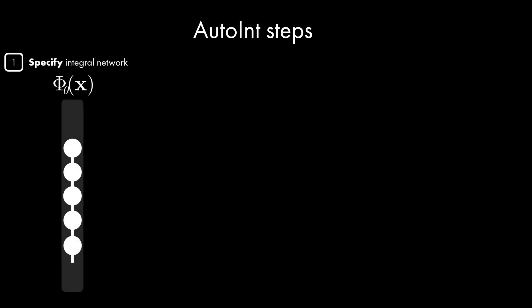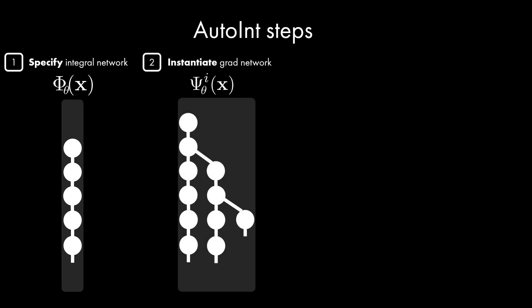In summary, AutoInt involves the following procedure. First, one specifies the architecture of the integral network. The grad network is instantiated with the computational graph corresponding to the partial derivative of the integral network output with respect to the input variable of integration.